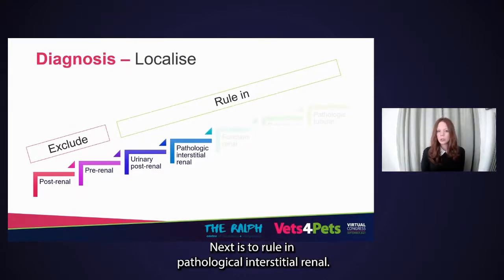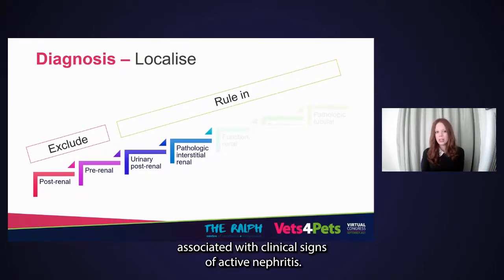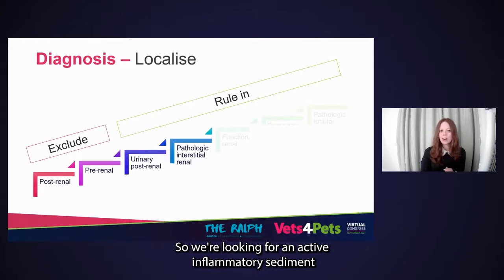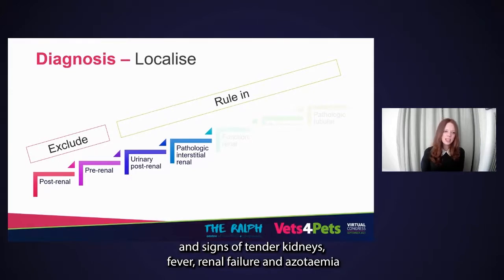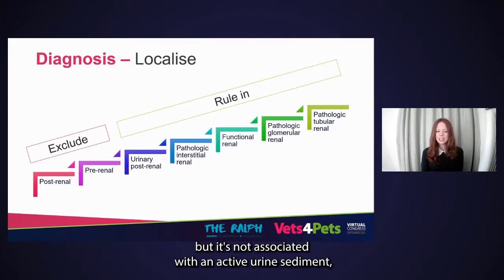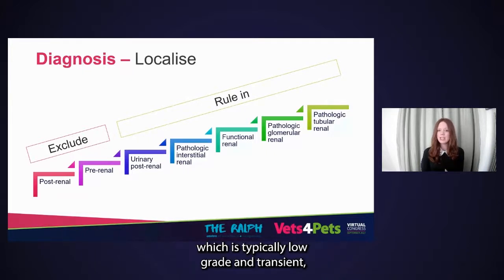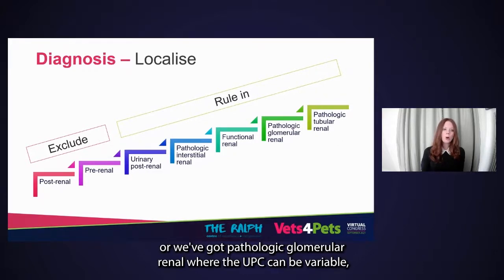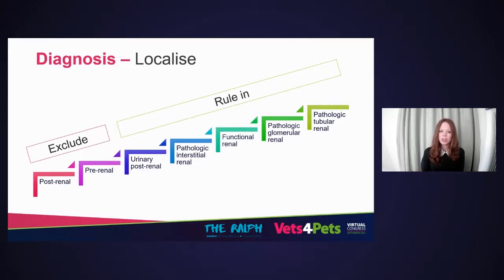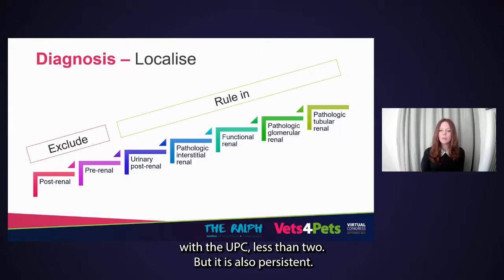Next is to rule in pathological interstitial renal causes: looking for evidence of inflammation associated with clinical signs of active nephritis, an active inflammatory sediment, tender kidneys, fever, and azotemia. If the proteinuria is urinary but not associated with an active urine sediment, the remaining possibilities are functional or physiological renal — which is typically low-grade and transient — or pathological glomerular renal, where the UPC can be variable but is increasingly suggestive if greater than two, or pathological tubular renal, which tends to be low-grade with UPC less than two but is persistent.